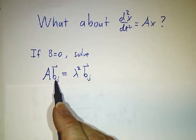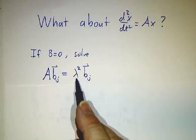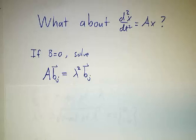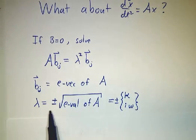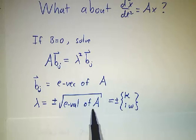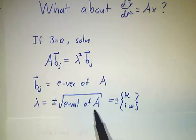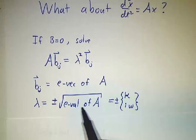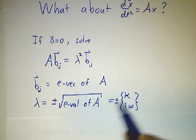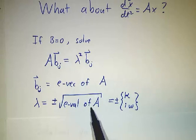So the vectors we're looking for are, in fact, eigenvectors of A. But they're not eigenvectors with eigenvalue lambda, they're eigenvectors with eigenvalue lambda squared. In other words, lambda is the square root of the eigenvalue of A, and it can have either sign. When the eigenvalue of A is real, sorry, is positive, and the square root is real, and we called it kappa. When the eigenvalue is negative, the square root was imaginary, and we called it i times omega.